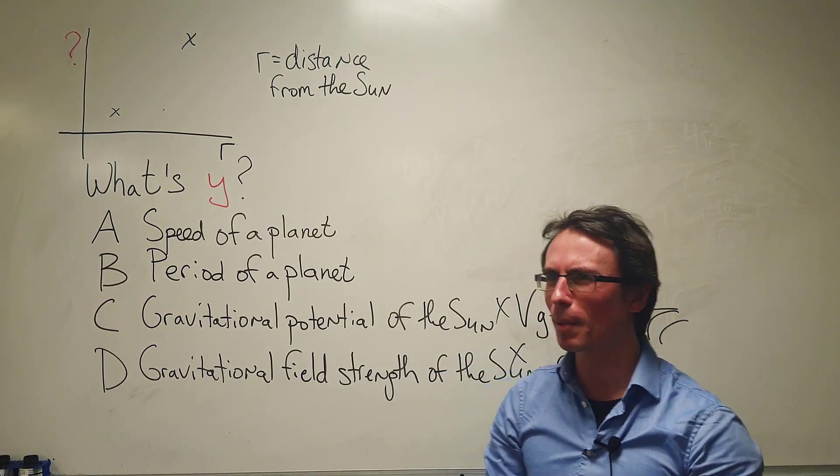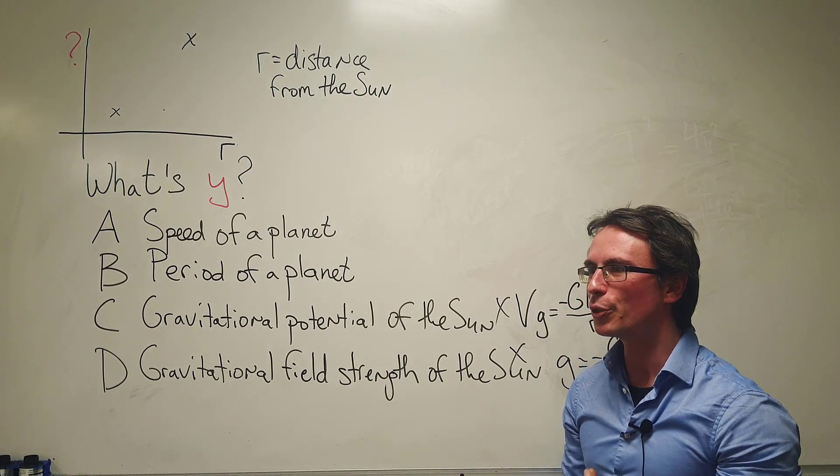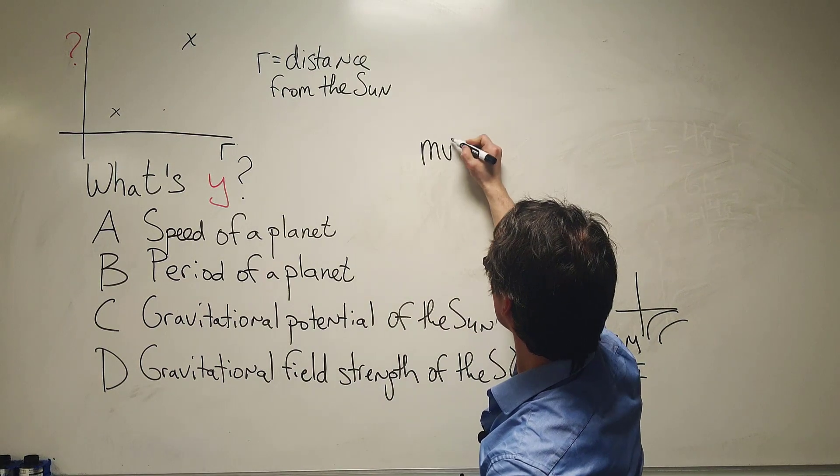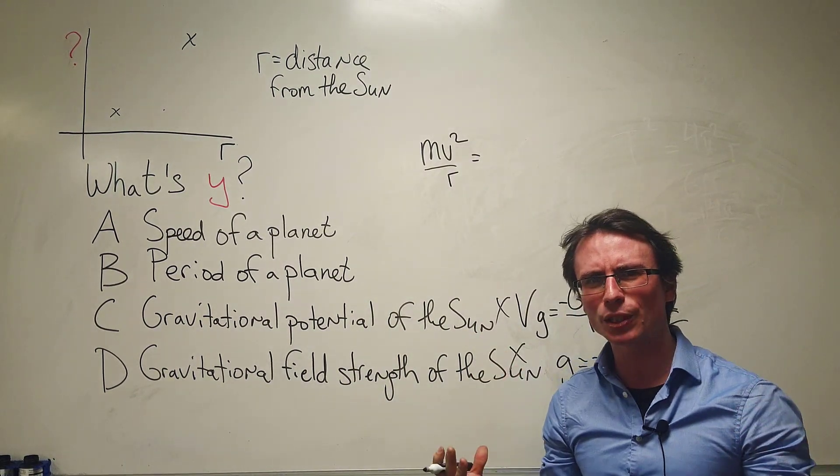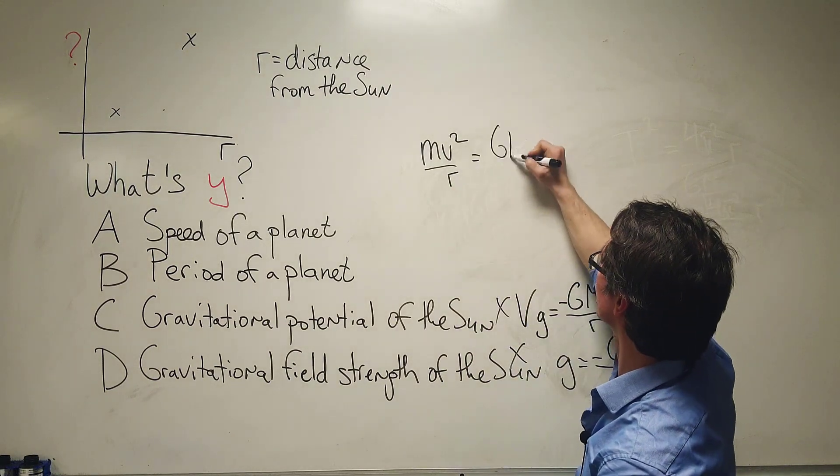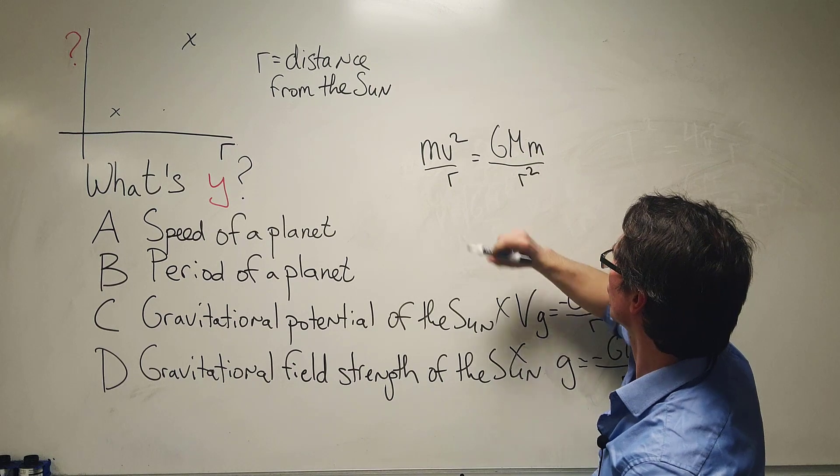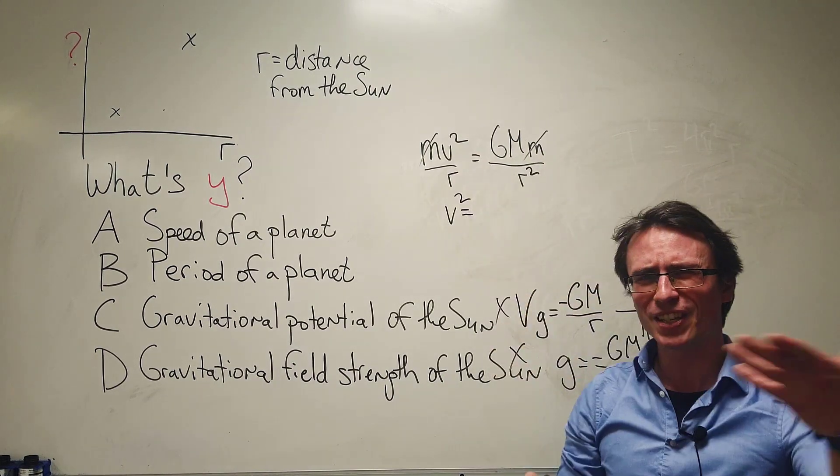In order to find the speed of a planet we can approximate this using the centripetal force, setting that equal to the gravitational force. So mv squared over r will be equal to the magnitude of the gravitational force, GMm over r squared. So we can cancel out the m's and we can rearrange for the speed.